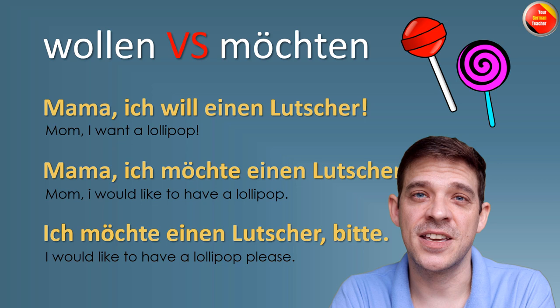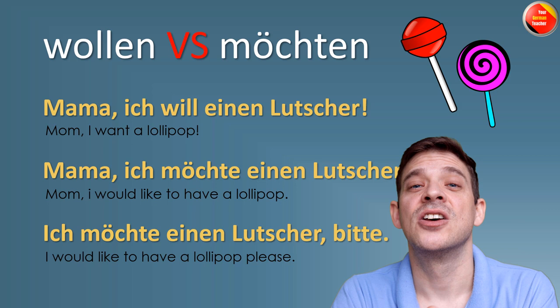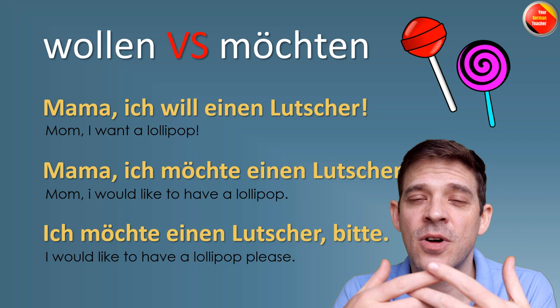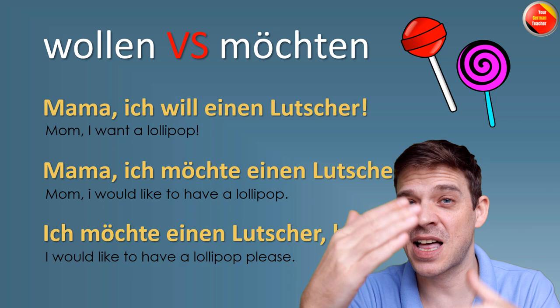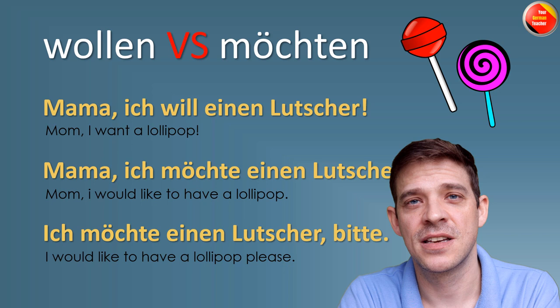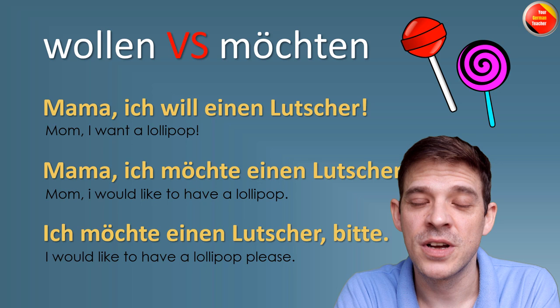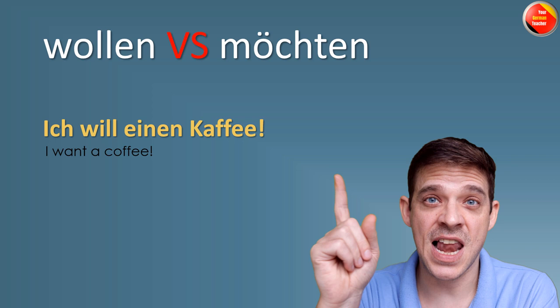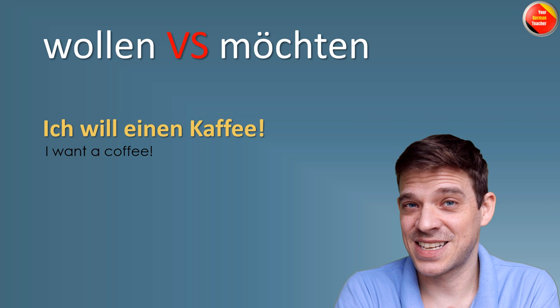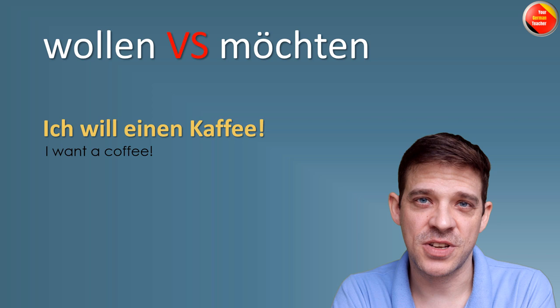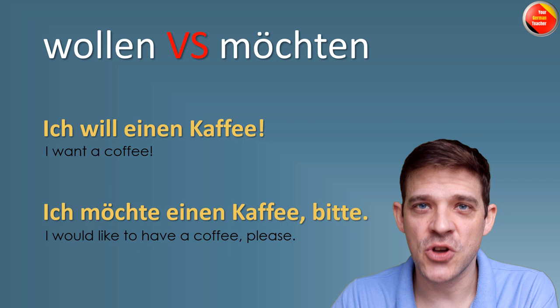For adults, don't use wollen — except if you really want to emphasize something strongly, for example as a boss giving instructions. But don't use it with strangers or when asking for something. Especially in restaurants: if you say 'Ich will einen Kaffee' to the waiter, he might look at you strangely. Always use möchten when ordering: 'Ich möchte einen Kaffee, bitte' — I would like a coffee, please. Then you will get your coffee right away.